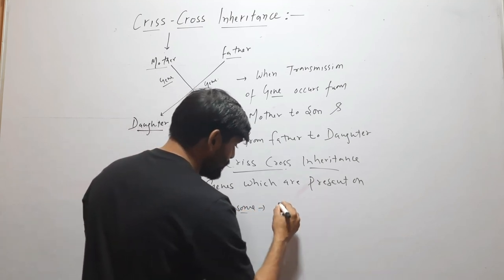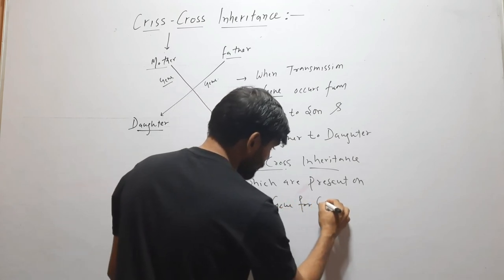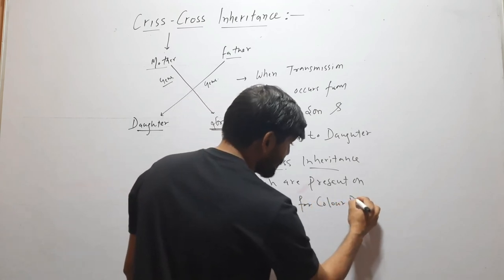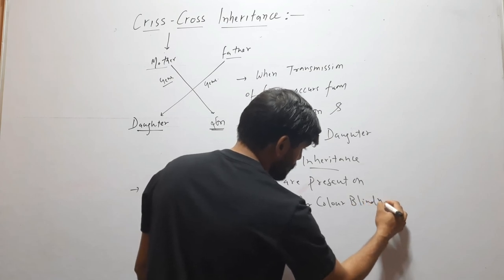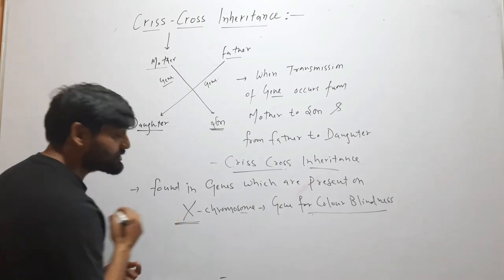For example, gene for color blindness. This gene for color blindness is present on X chromosome.